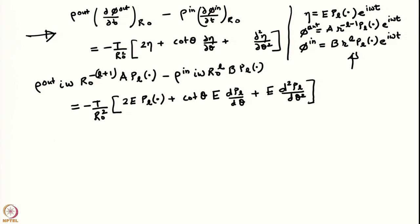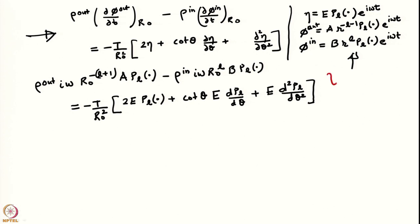Looking at the right-hand side of this equation, one term contains P_L(theta), but the other two terms contain the first and second derivatives of P_L with respect to theta. If we want a dispersion relation independent of theta, we need to convert the right-hand side so that all terms are proportional to P_L(theta). Let us see how to do that.